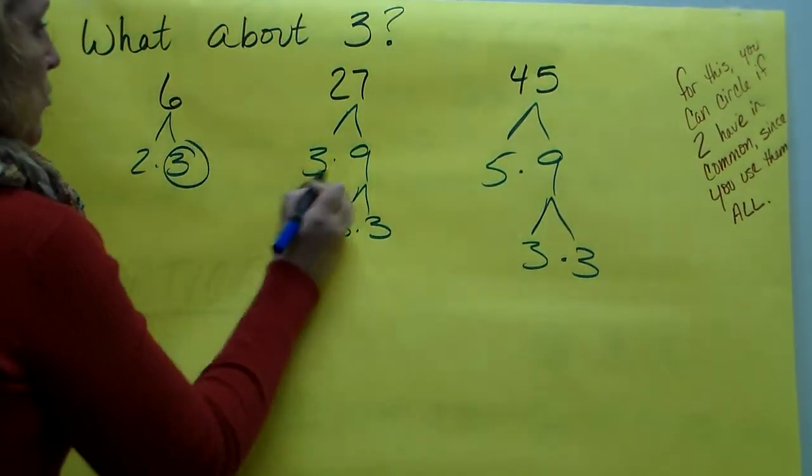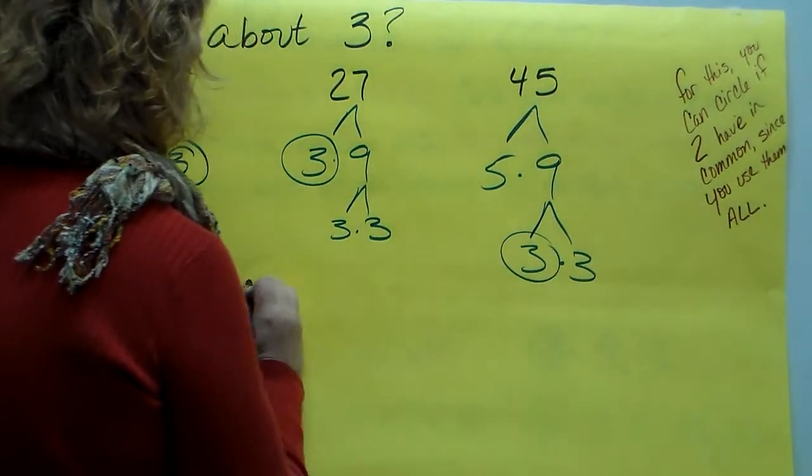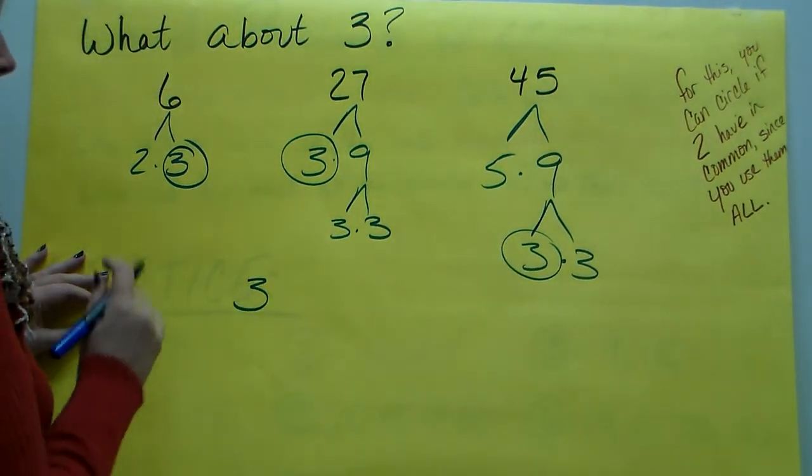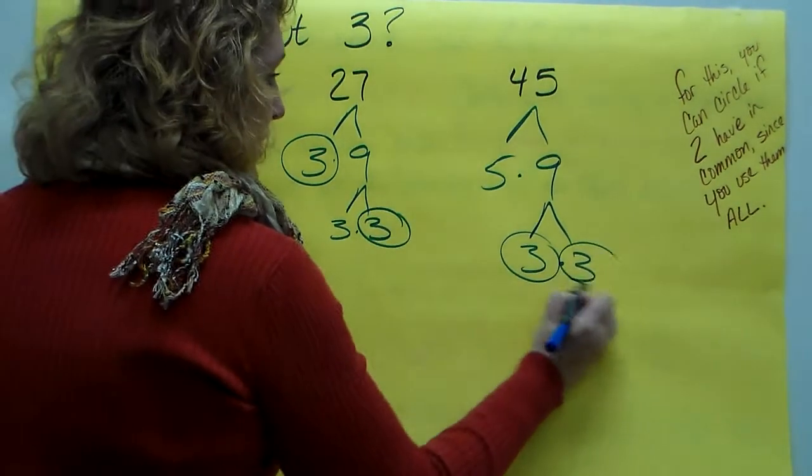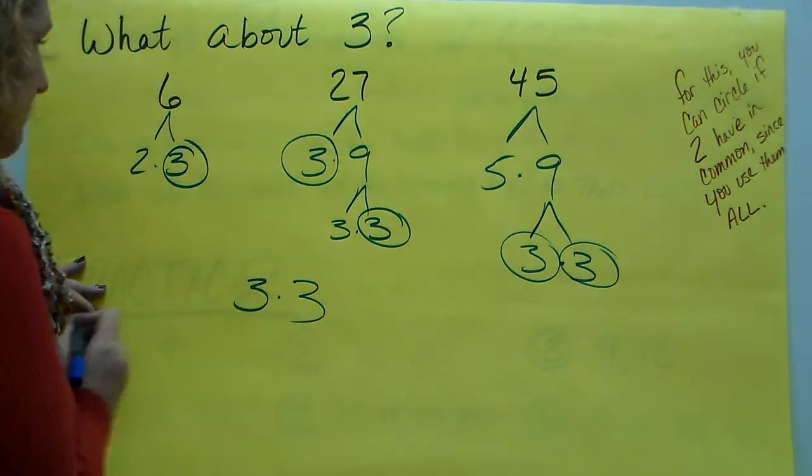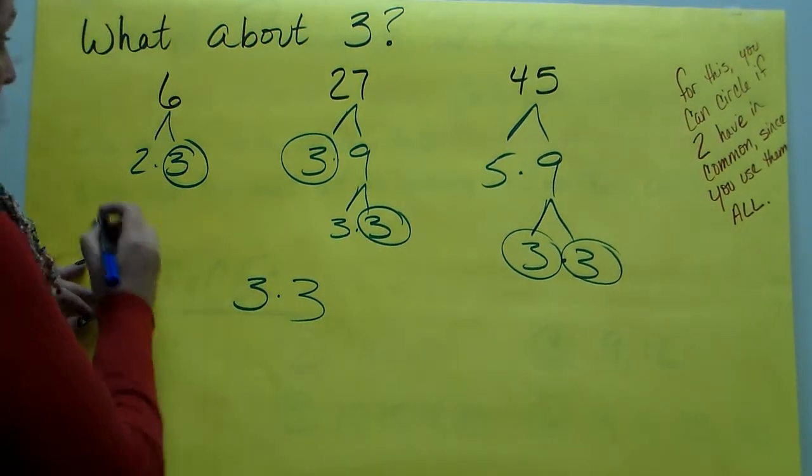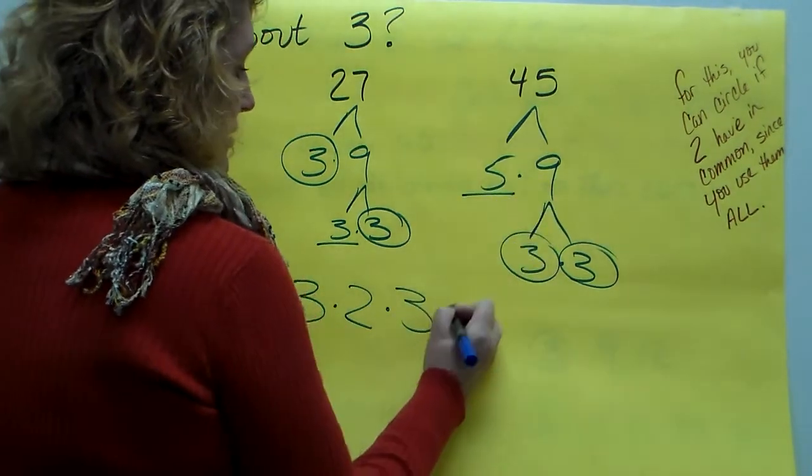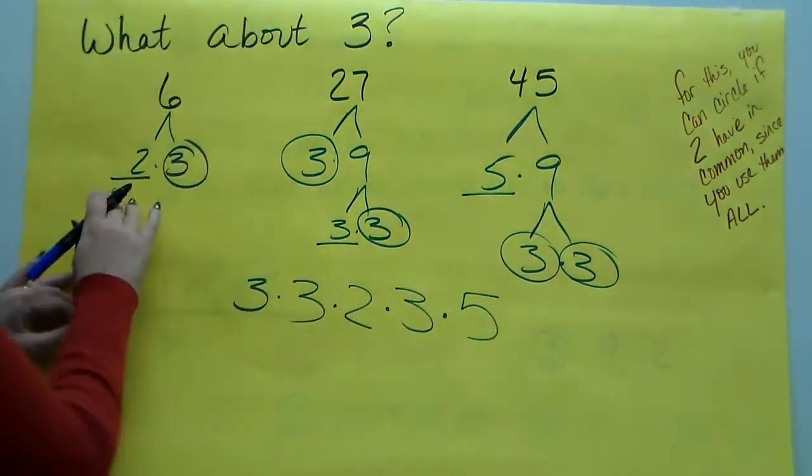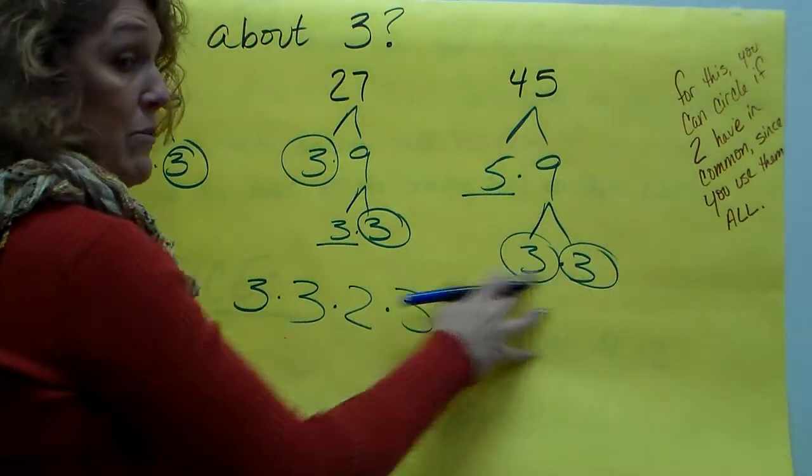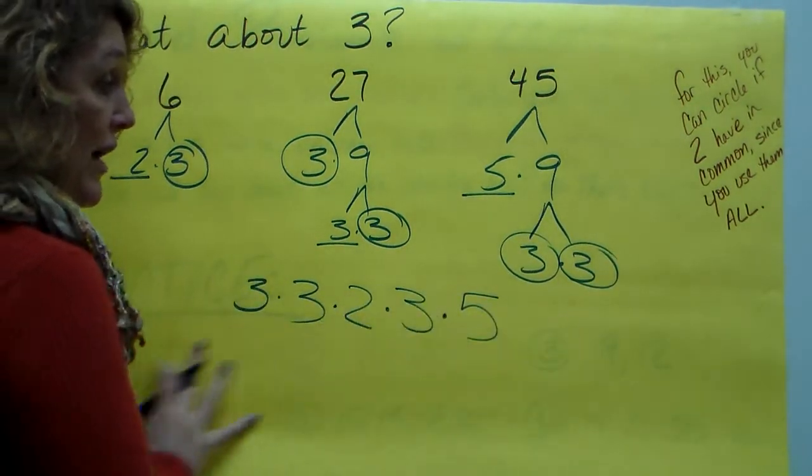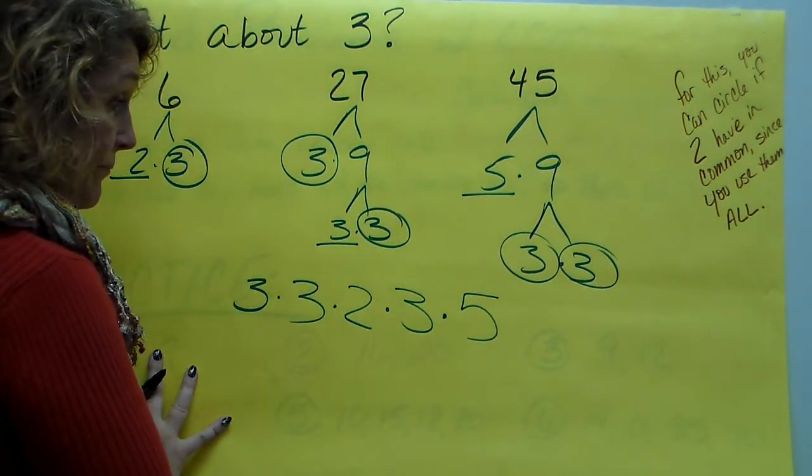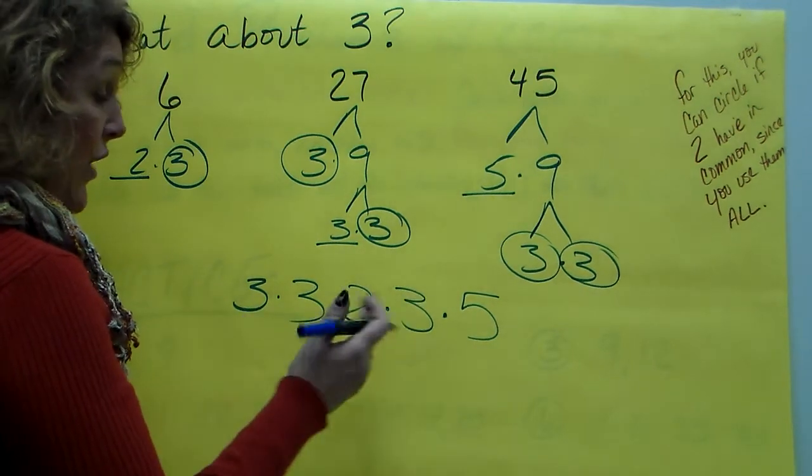So, here we have 1, 3 in common. We'll write that down. Then, they have another 3 in common. We'll write that down. Then, we pull out all of the leftovers. And look at what I do to them so I can keep track. But all I have to do now is multiply these together.